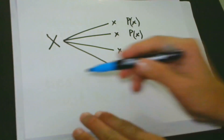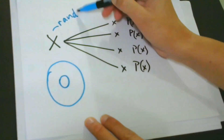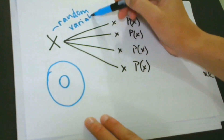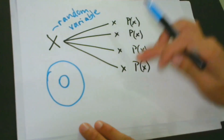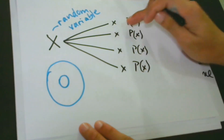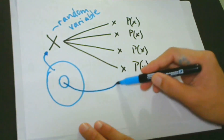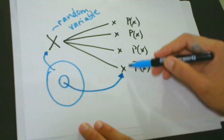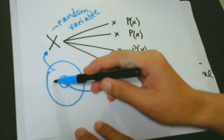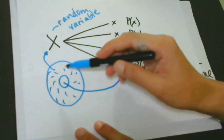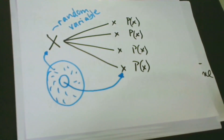For better understanding, let's make a drawing. We have a big X, which is the random variable, and it can take many possible values — the first x, second x, third x, and fourth x. Each x here has its own probability measure or value. The big X contains all these small x's as subsets, and outside the small x's are also other values that still belong to the big X.